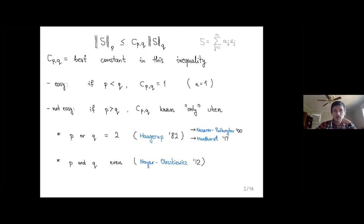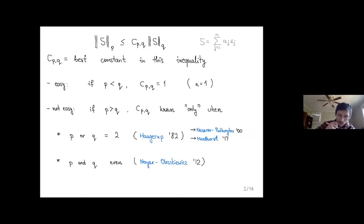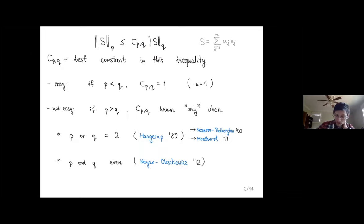We are interested in best constants. From now on, c_{p,q} will mean the smallest number c such that this inequality holds for every n and every choice of weights. When p is less than q, by monotonicity of Lp norms the inequality holds with constant one, and this is sharp as seen in the case n=1, since a random sign has all moments the same — its absolute value is a constant random variable.